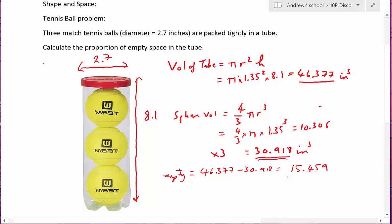And then expressing that as a proportion of the whole thing, 46.377, we get an answer of exactly .333, in other words one third of the tube is empty.